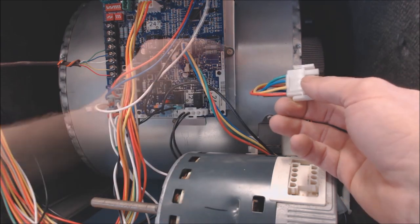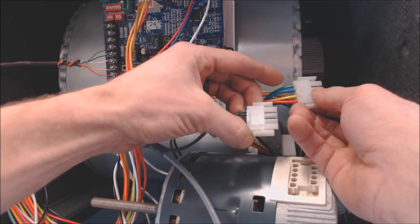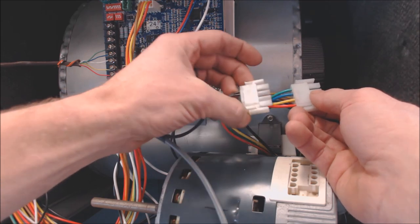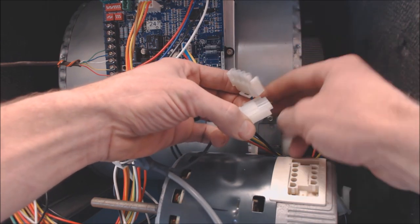...you can actually bypass that by just looking to see which wires need to be powered. So in this case, it's green and blue, and that's going to be the 24 volt signal that we need to send to that blower motor in order to have it turn on.